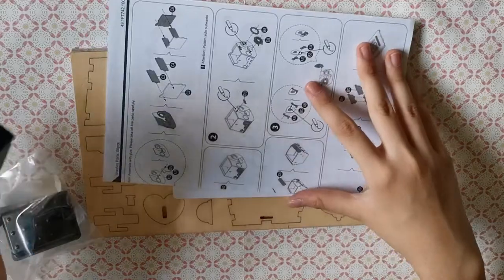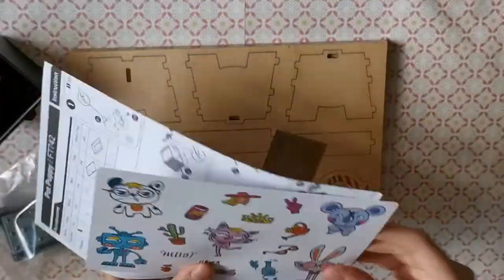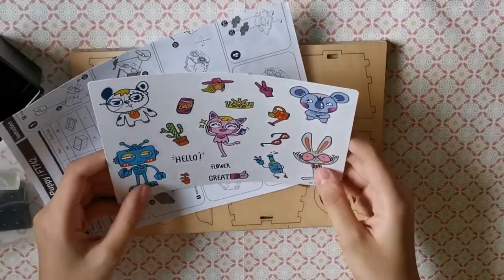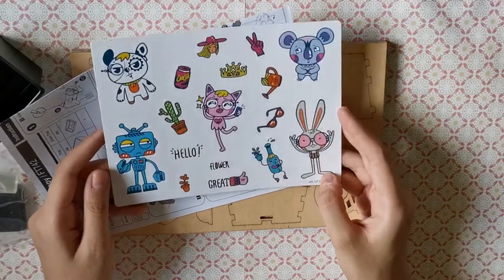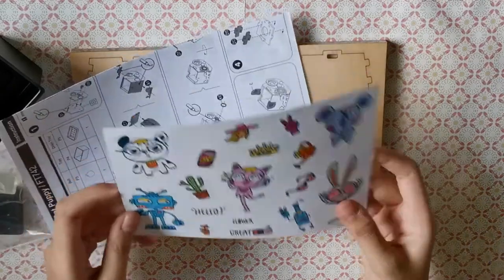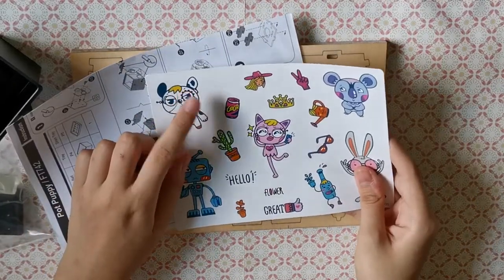So we have the base pot, a bunch of nice little bonus stickers of all the robo creatures including robo puppy.